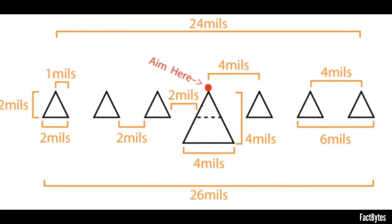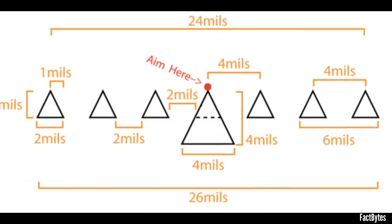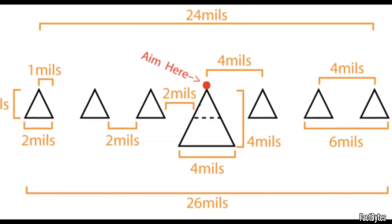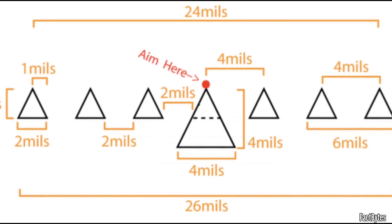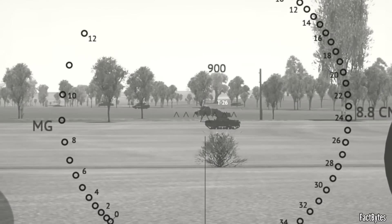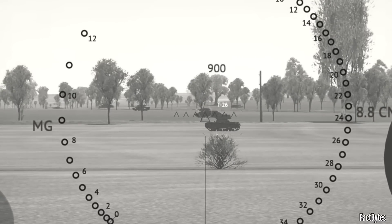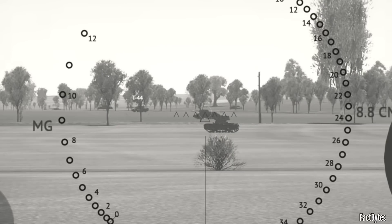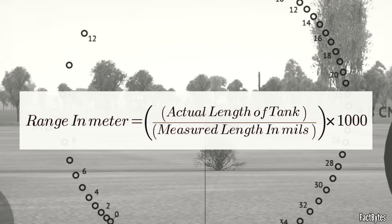Additionally, note the distances between the triangles. The significance of the distances and mils lay in their crucial role in determining the range of a target. When faced with an enemy tank, a German tank gunner would measure how many mils the tank occupied in his gun sight, then he would use the following formula to calculate the range.